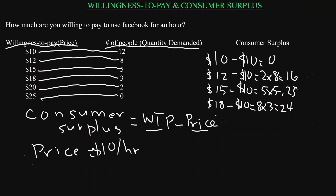For those willing to pay $20, the price is $10, so the surplus per person is $10. With two people, the group surplus is $20. Adding all the surpluses together: $0 plus $16 plus $25 plus $24 plus $20 gives us a total surplus of $85.